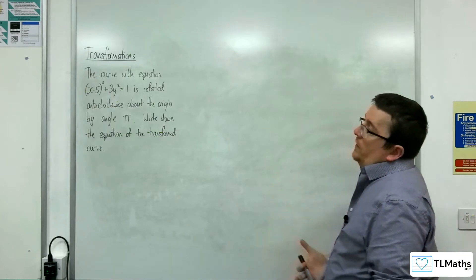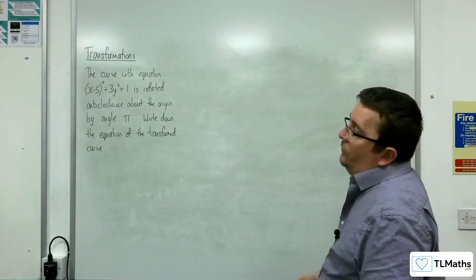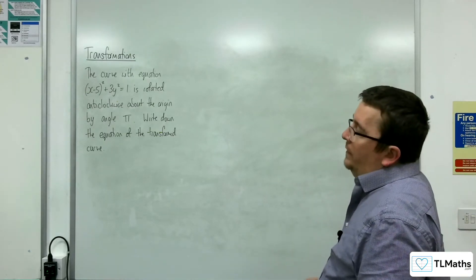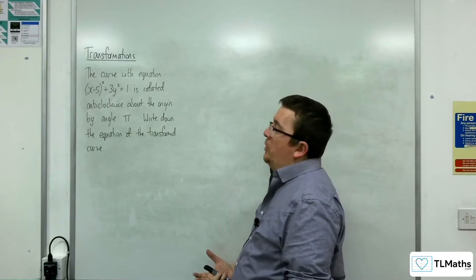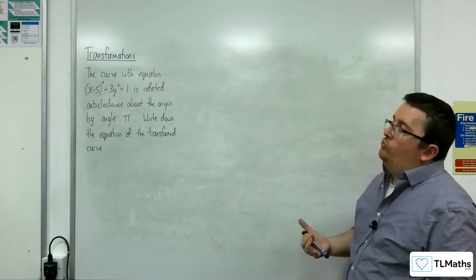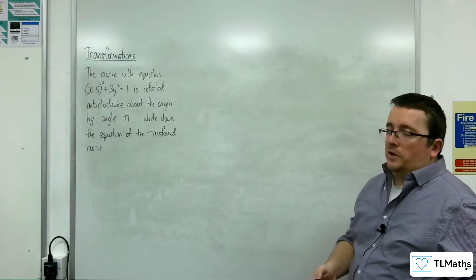In this video, we've got the curve with equation (x - 5)² + 3y² = 1 is rotated anticlockwise about the origin by angle π. Write down the equation of the transformed curve.